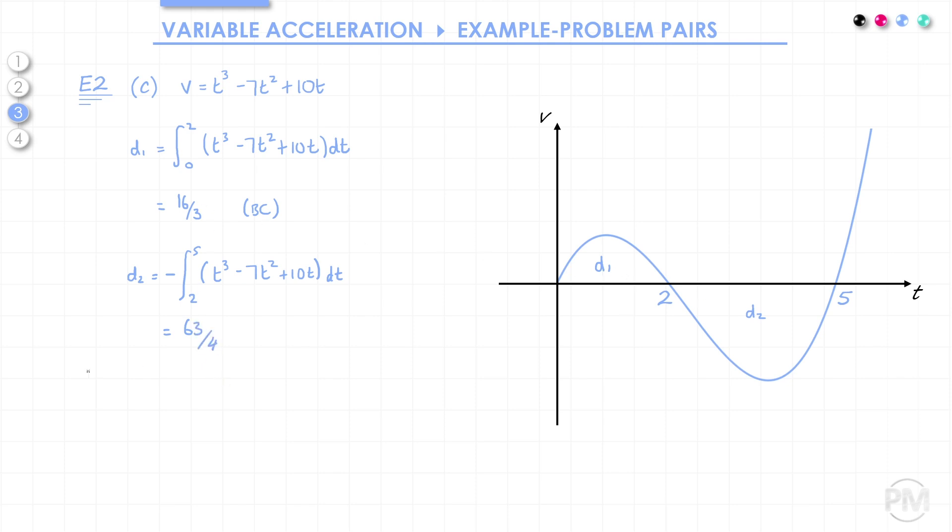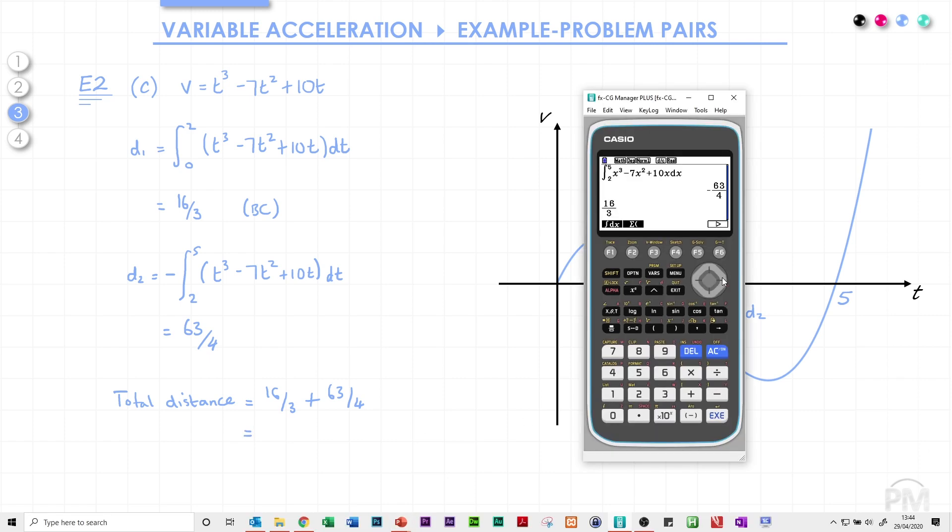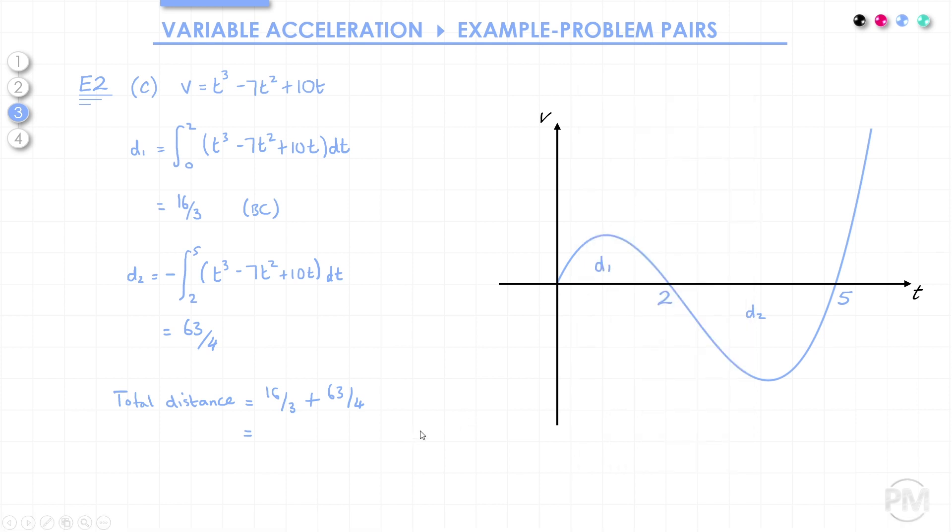Now that we've got the two separate distances, we can find the total distance. It will be 16 over 3, plus 63 over 4, which gives us 253 over 12, or 21.1 to 3 significant figures.